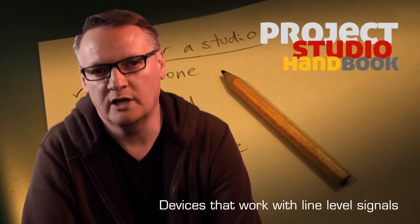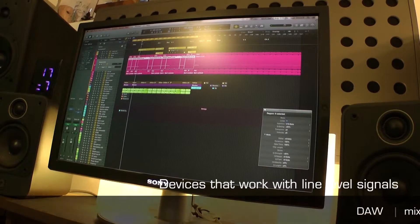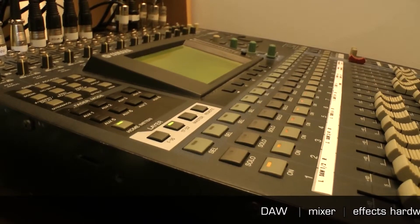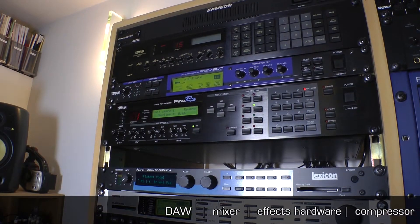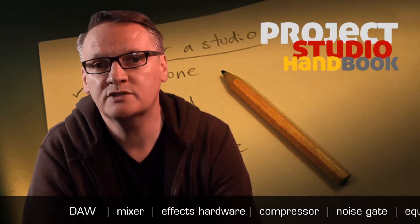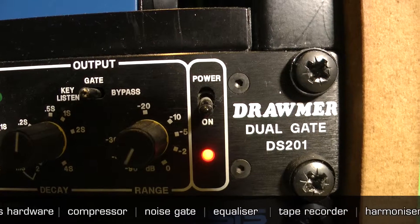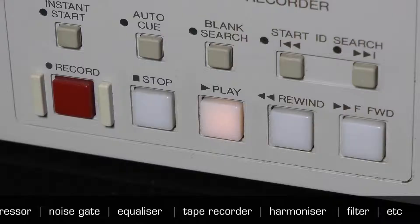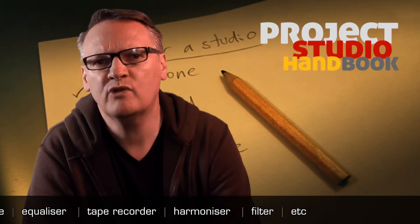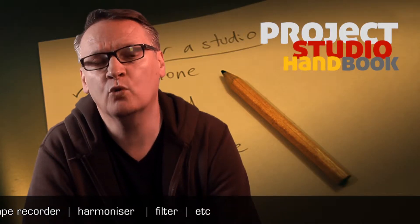Devices that work with line level signals include DAWs, mixing desks, hardware effect processors, dynamic processors such as compressors and noise gates, equalizers, tape recorders, and a wide range of different processing and recording devices.